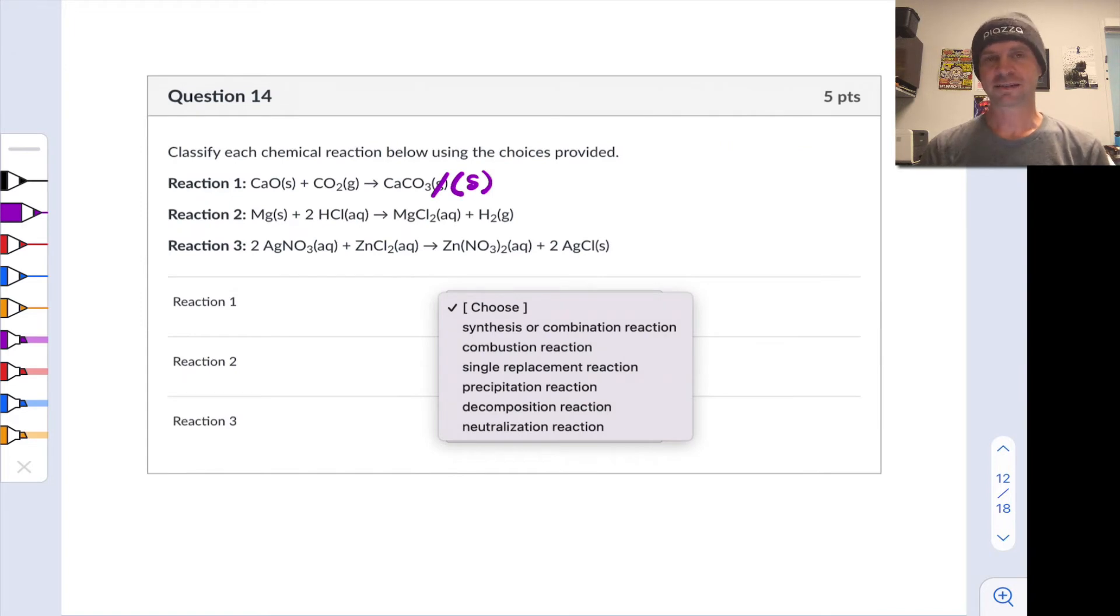In this problem, we're asked to classify these chemical reactions according to the scheme you see here with six possibilities: synthesis, combustion, single replacement, precipitation, decomposition, or neutralization. So, in each case, let's take a look at the reactants and products, try to visualize what's going on, and see where these fit. So, in the first reaction, we've got calcium oxide solid reacting with CO2 gas to form solid calcium carbonate. Not originally said gas, but should have said solid.